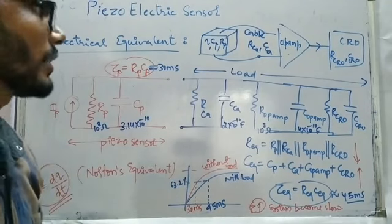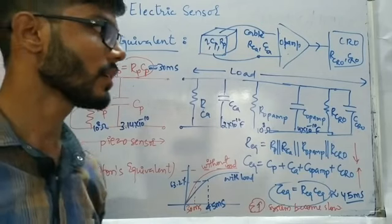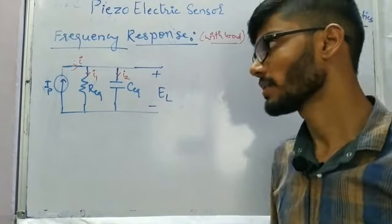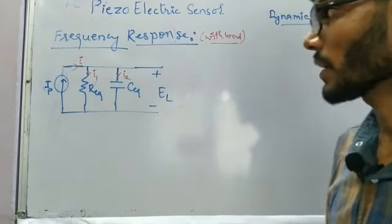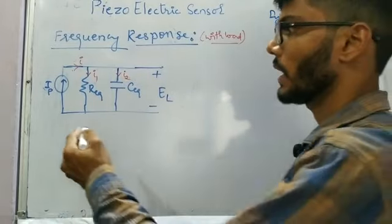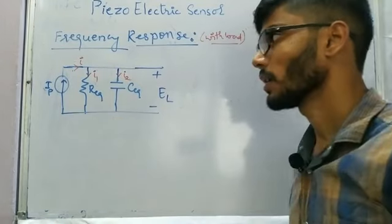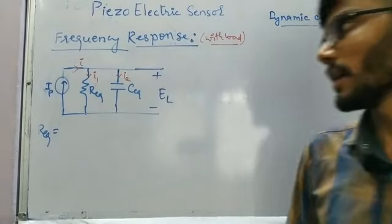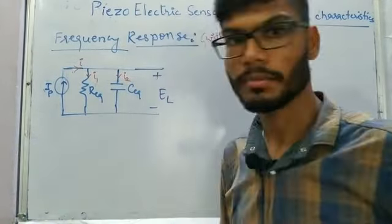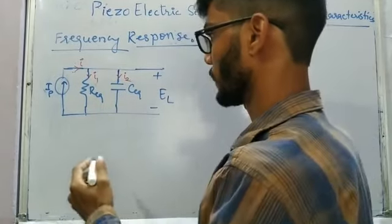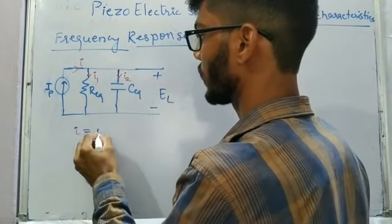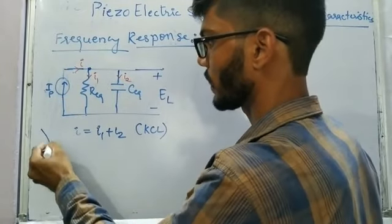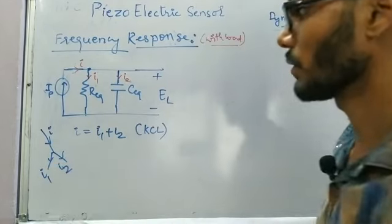Now we will understand the frequency response of the sensor. The Norton equivalent circuit of the piezo sensor is drawn with load condition, with current I splitting into branches through R_eq and C_eq. Using KCL: I = I1 + I2, where I = dQ/dt (because dynamic force produces rate of change of charges).